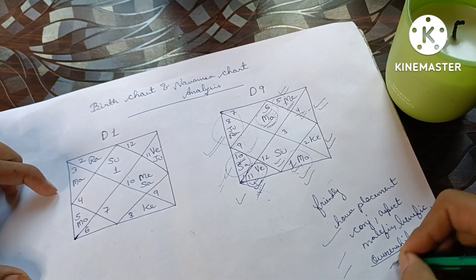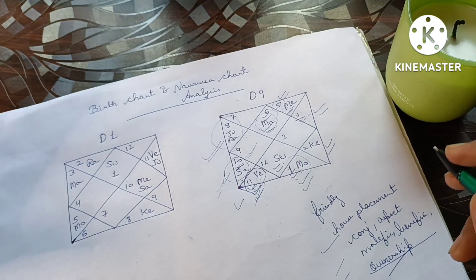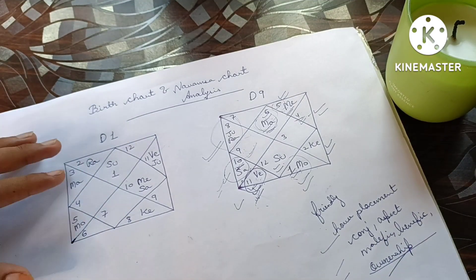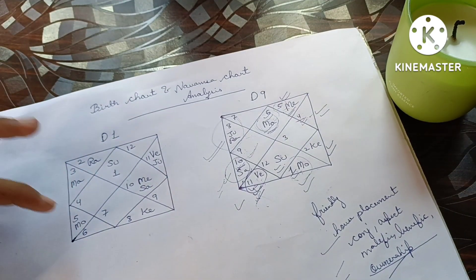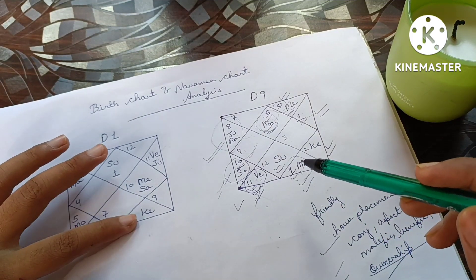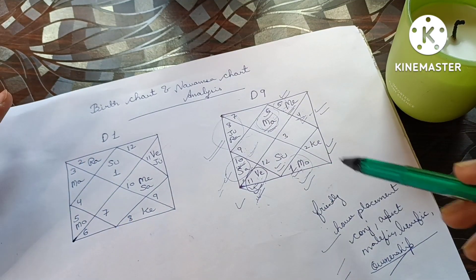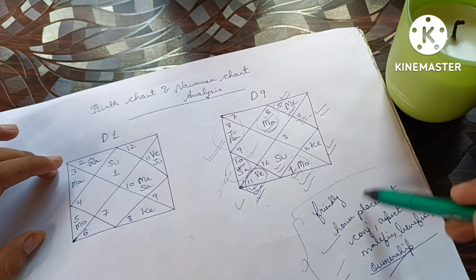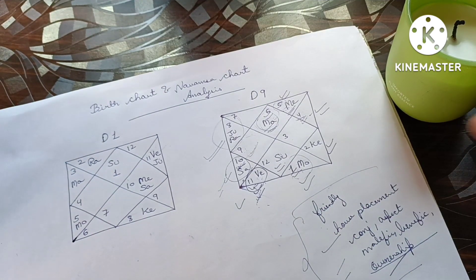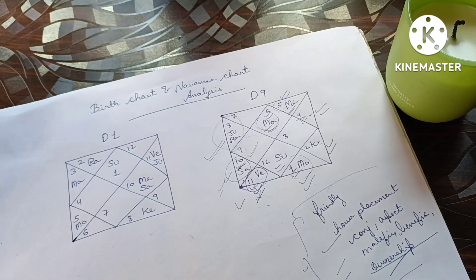Always remember that for each particular ascendant, there are certain planets which are malefic and certain planets which are benefic. House placement is very important — check whether it is the 6th lord, 8th lord, or which house ruler. This way, we can determine what results a particular planet will give.